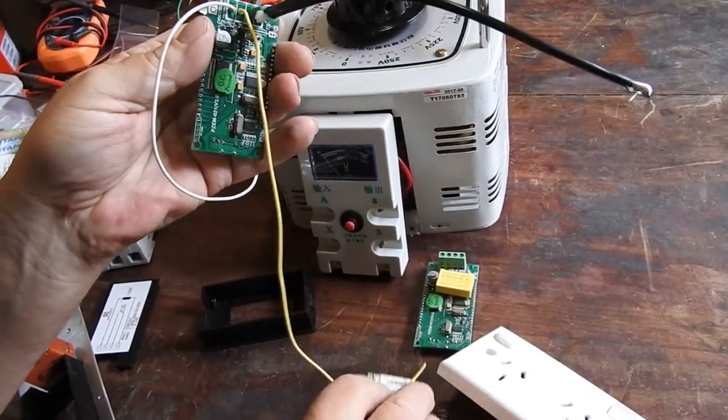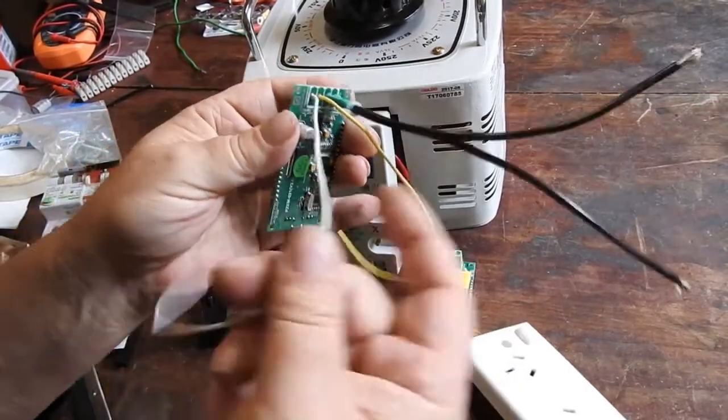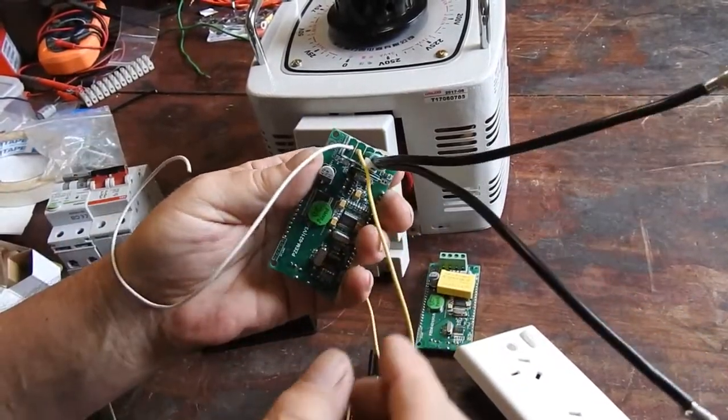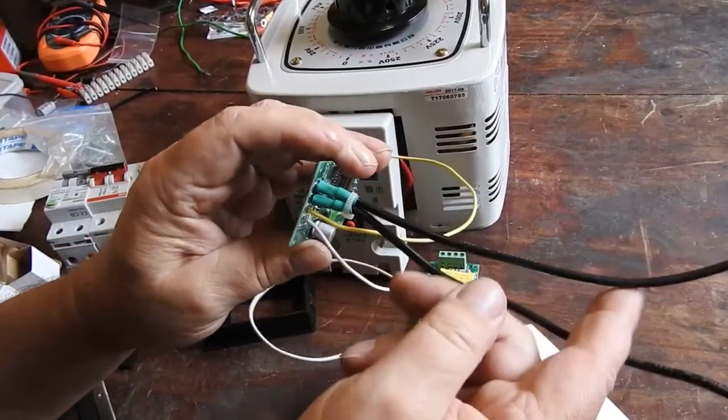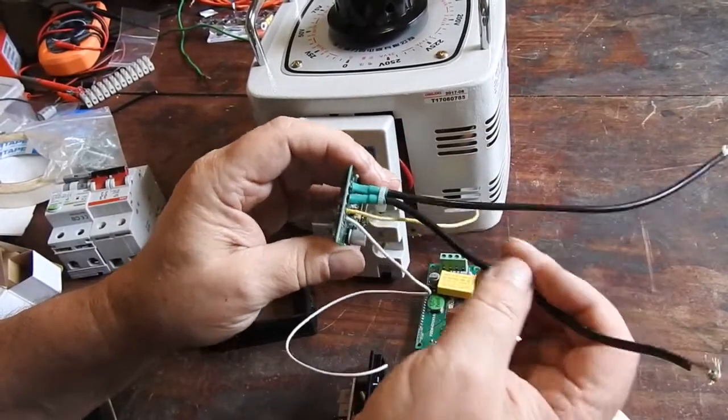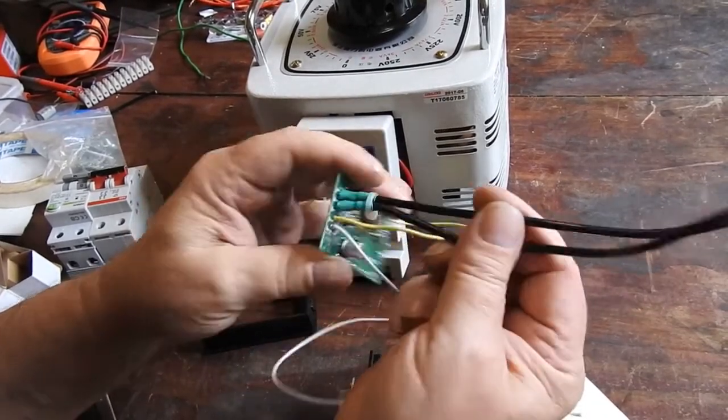So this will go to the voltage to be measured, and the neutral from source to load will go via this current sensor resistor.